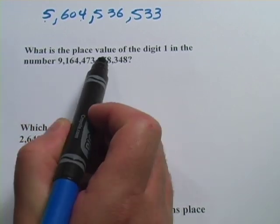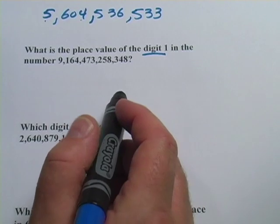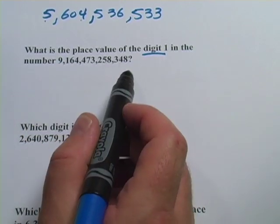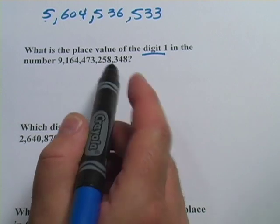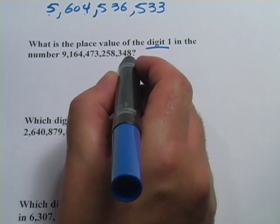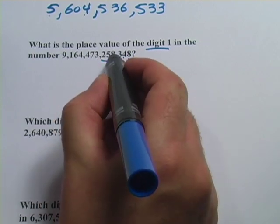This one says, what is the place value of the digit 1? So when they say the digit 1, we're just looking for that number in here. In the number... Let's take this a chunk at a time. Here are the ones, tens, and hundreds.